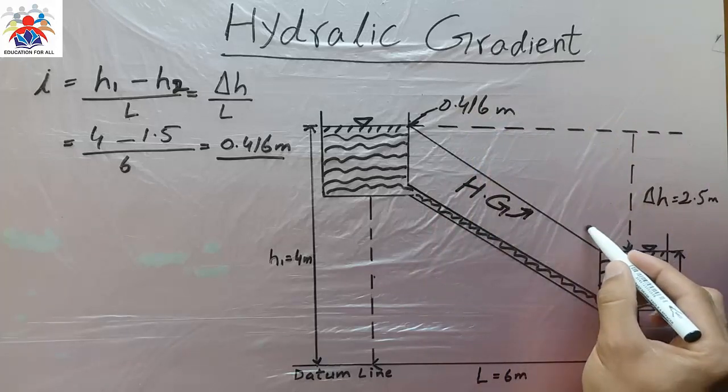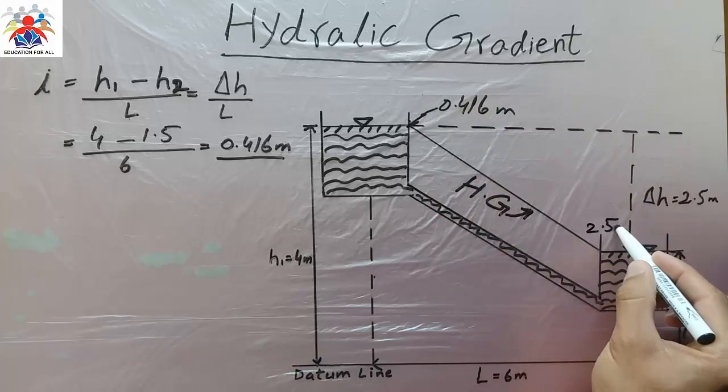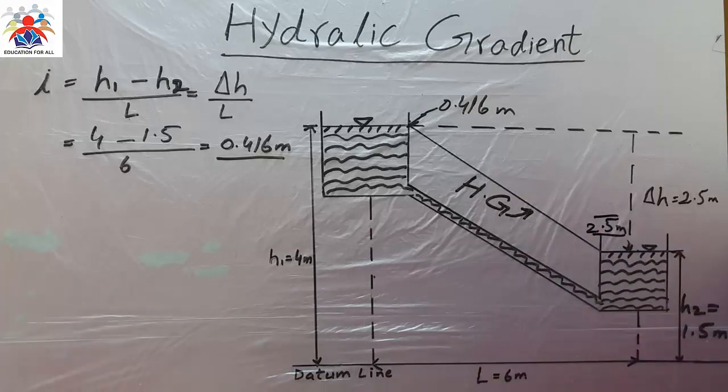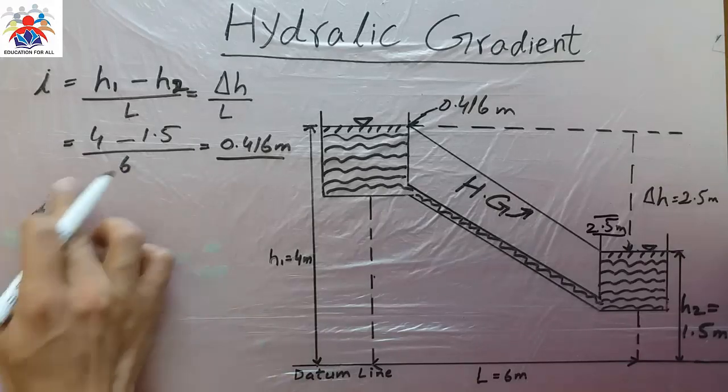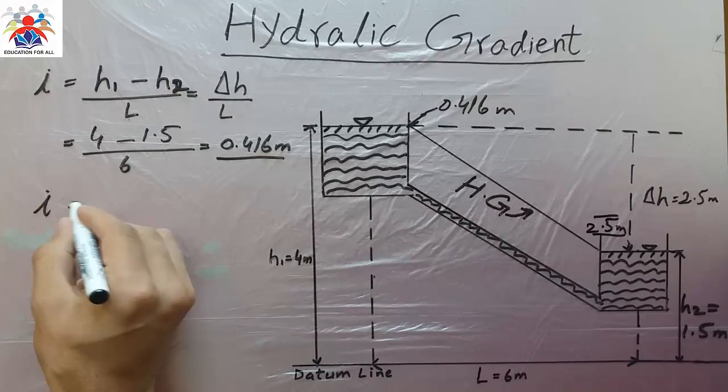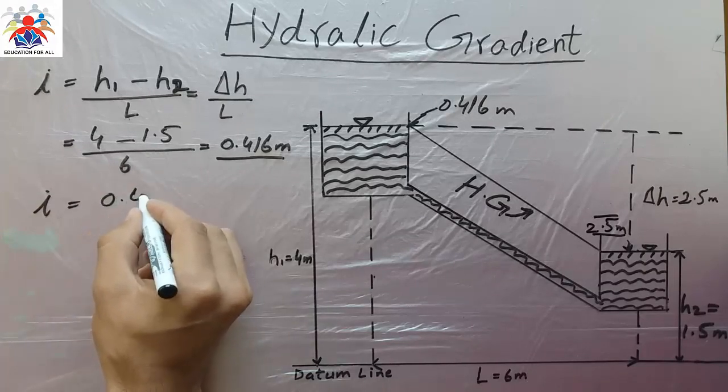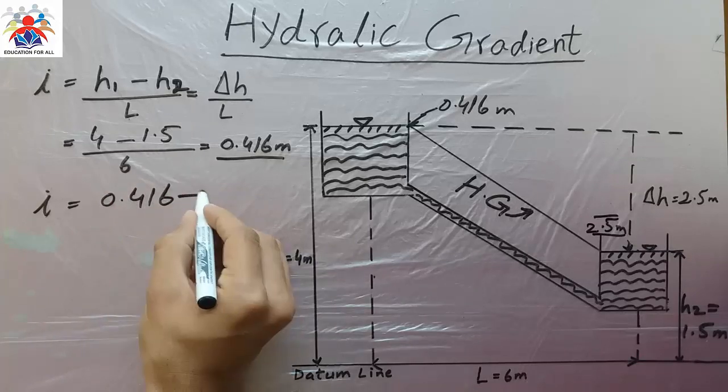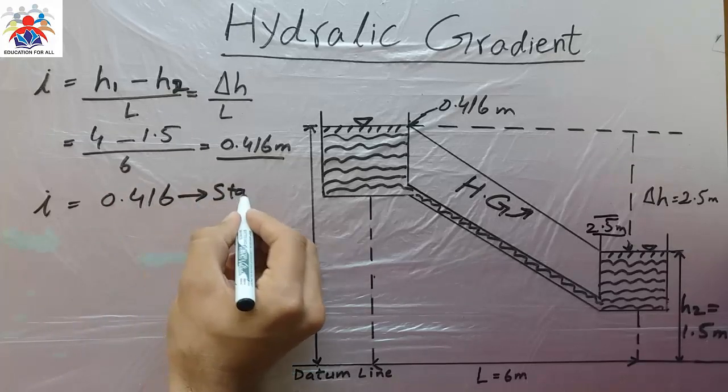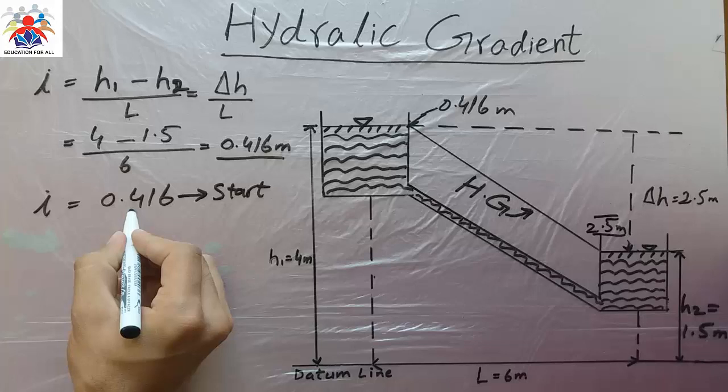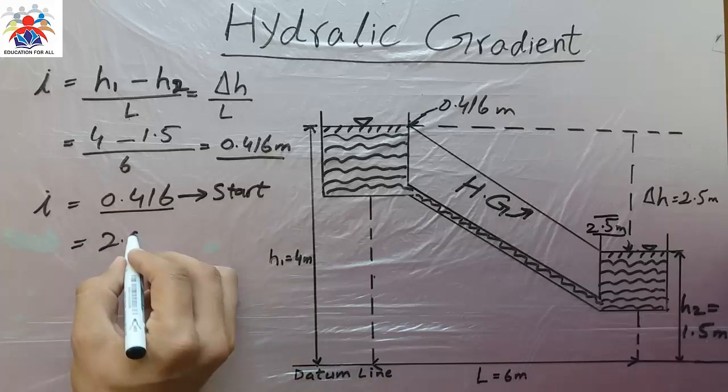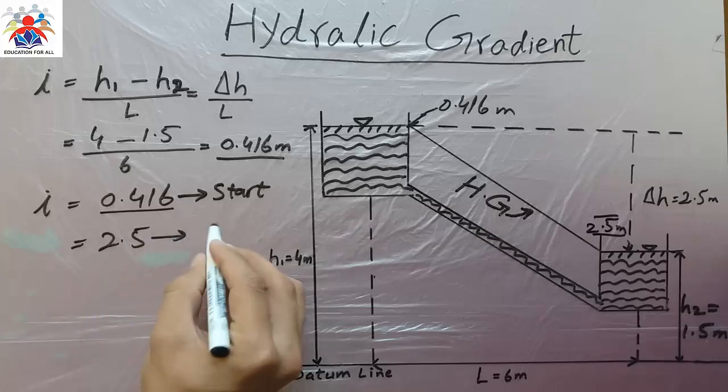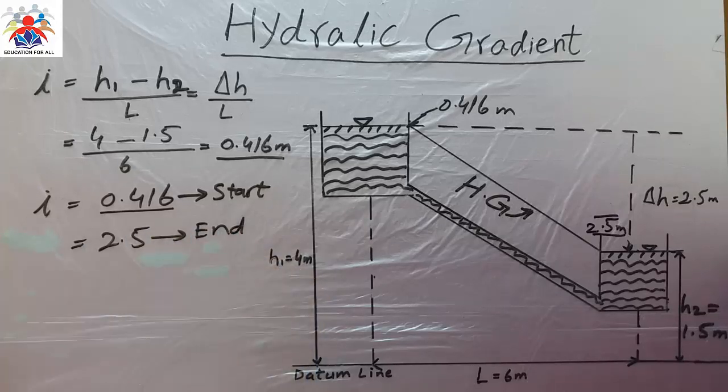You can just write it down: I is equal to 0.416. This is the starting point, so it means from this height our line starts to 2.5. This is our end point of our hydraulic line.